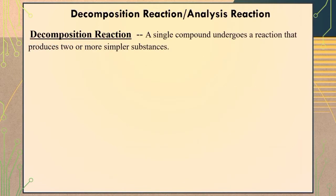Another type of chemical reaction is decomposition reaction, which is also called analysis reaction. This type of reaction is the reverse of combination reaction. Here, the process involves only one reactant dissociating into two or more products. The products may be the constituent elements of the reactant or simpler compounds derived from the reactant. Usually, the decomposition reaction requires energy input.